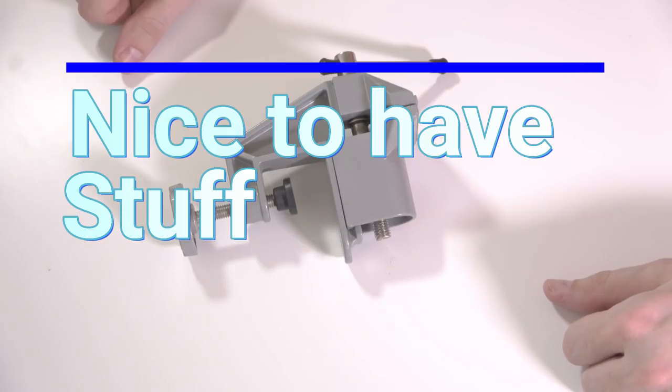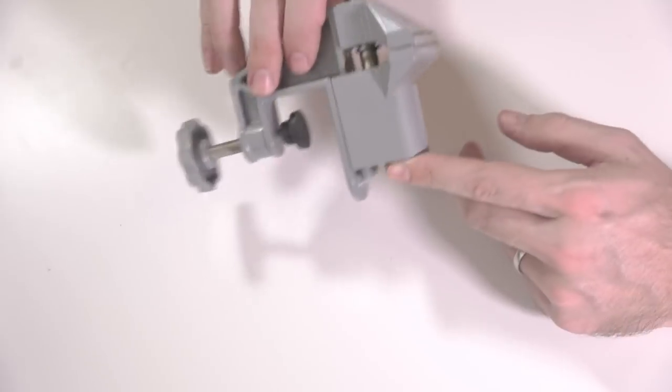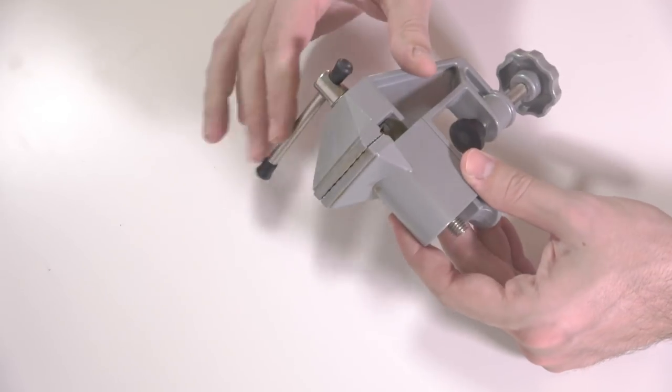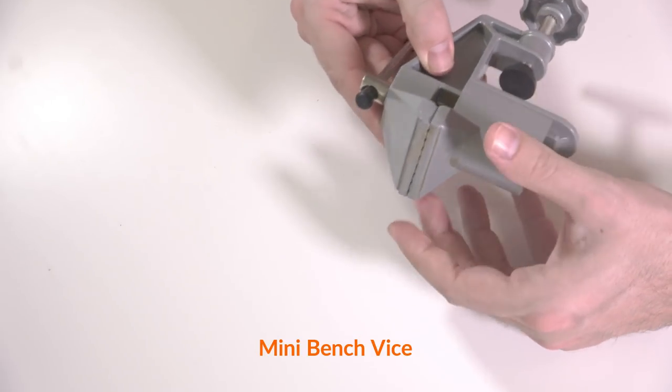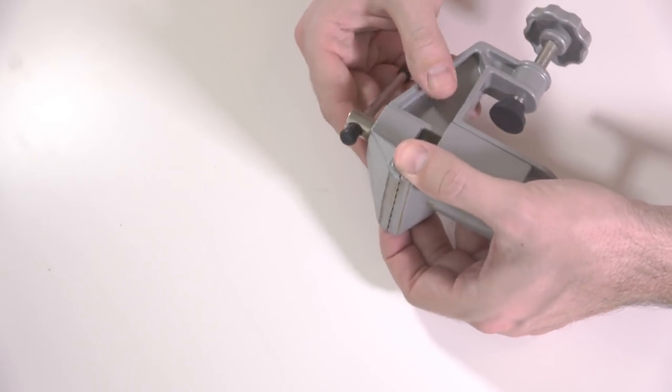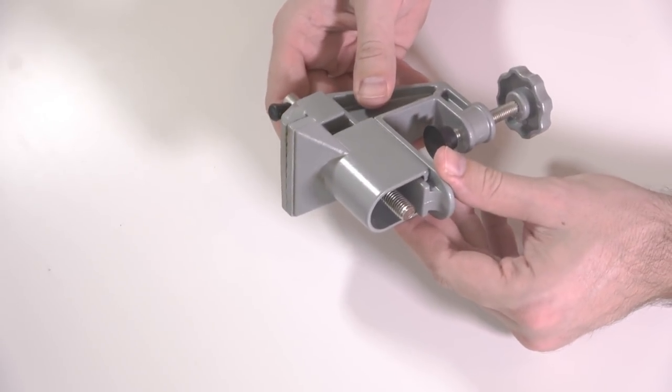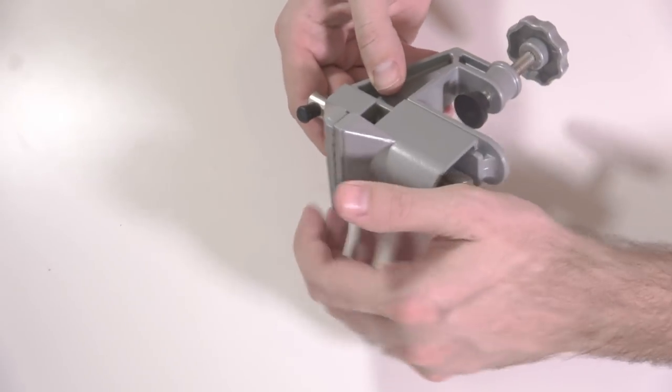Now we'll move on to the stuff that I think is nice to have or that I use from time to time, in no particular order. First of all is a mini bench vice. Don't buy one like this, this is a cheap Chinese one, it is absolutely horrendous, there's far too much play in it. So if you're going to get one, you're probably best to get a jeweler's vice, and that'll be much more accurate and much more useful just to hold pieces of metal in when you're filing.